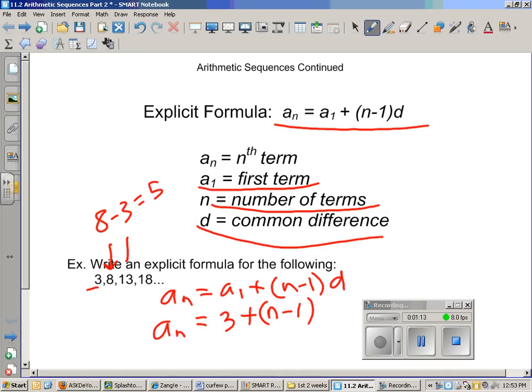You can double check to make sure that you have an arithmetic sequence by doing it to the next number. So for d, we put 5. You now have an explicit formula that is specific to this set of numbers.